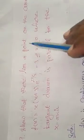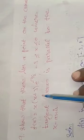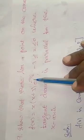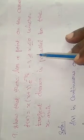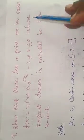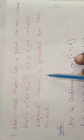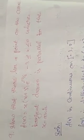There lies a point on the curve f(x) = x(x+3)e^(-π/2) where -3 ≤ x ≤ 0 where the tangent drawn is parallel to the x-axis. Solution.